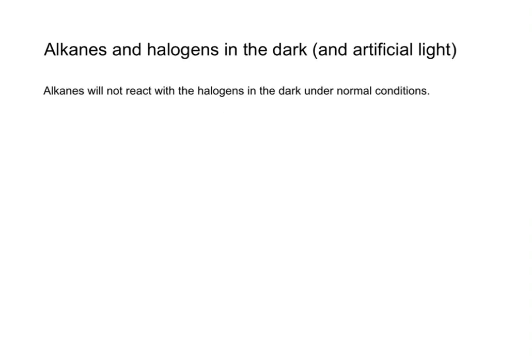So the alkanes and the halogens in the dark artificial light will not react, so I'll show you that here with methane as an example. So methane is CH4 and if I add that to bromine, which is Br2,